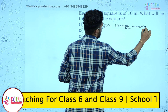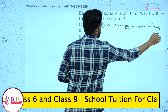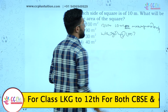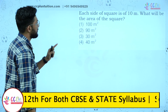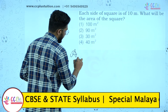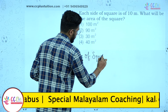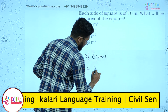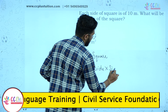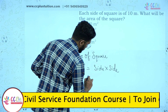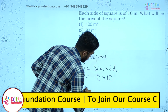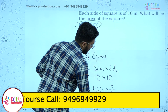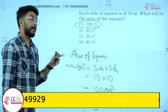The square has a side of 10. Area of square is side into side. So 10 into 10 equals 100. The area is 100 meters square. We answer 100 meters square.